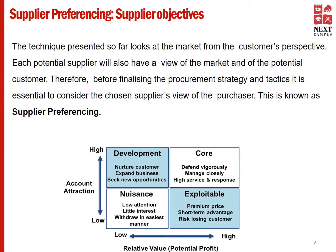The last box is on the bottom right-hand side. For these customers, the account attraction is low but the current profit is very high. With these customers, the supplier would charge a premium price and would take a short-term advantage.